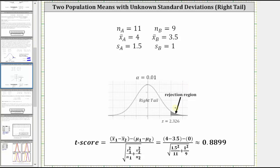Again, if we were doing this by hand, we would use the t-score formula shown here and calculate the same t-score that the TI-84 gave us, which is 0.8899. But notice how this t-score is not in the rejection region. It would be approximately here, and therefore we do not reject the null hypothesis.